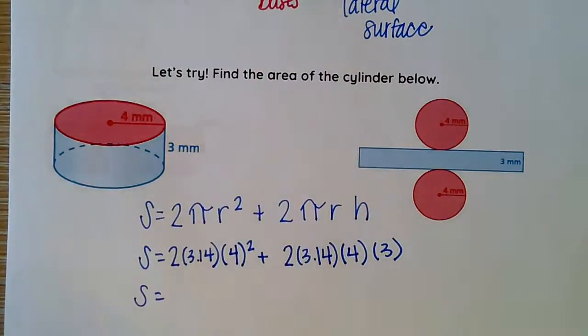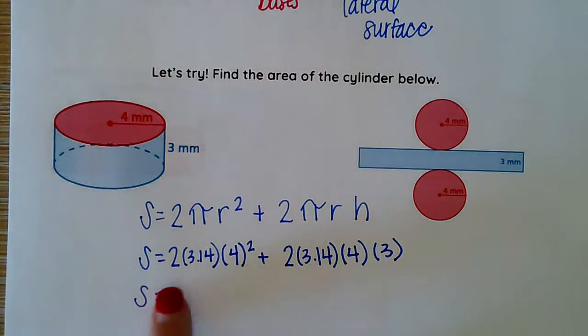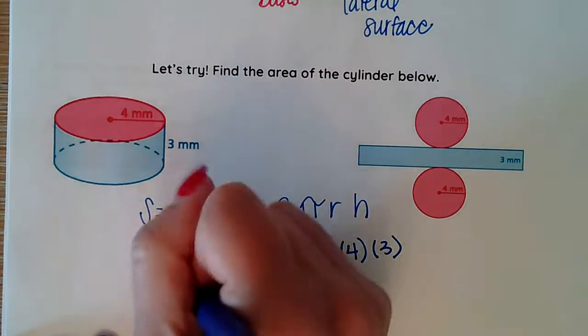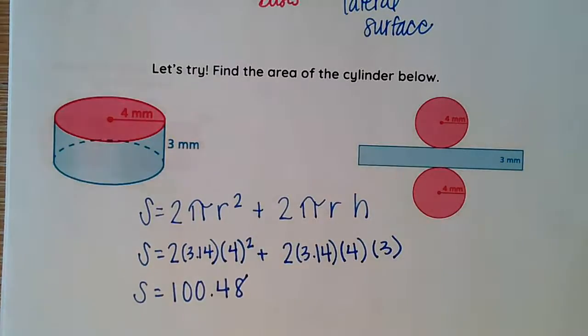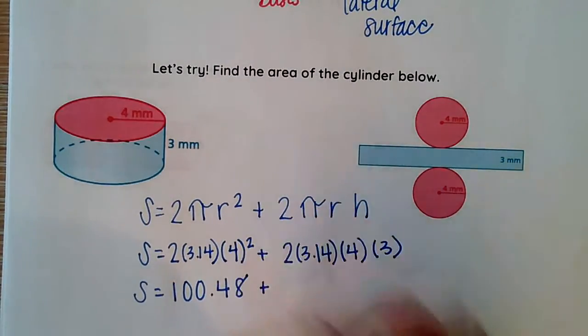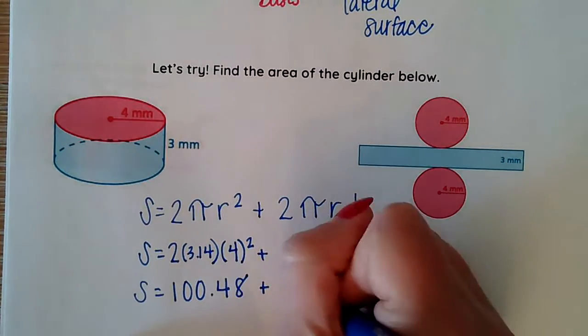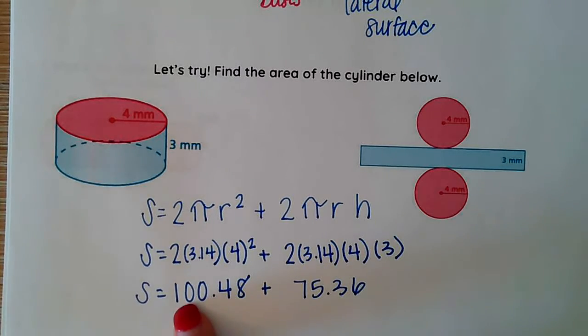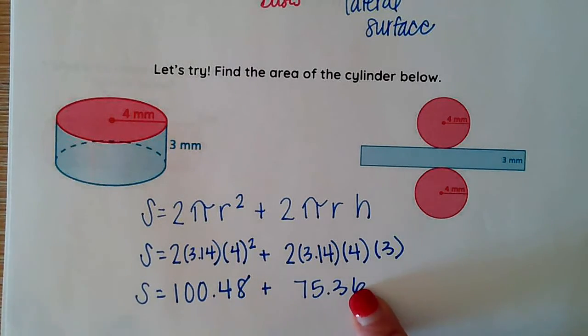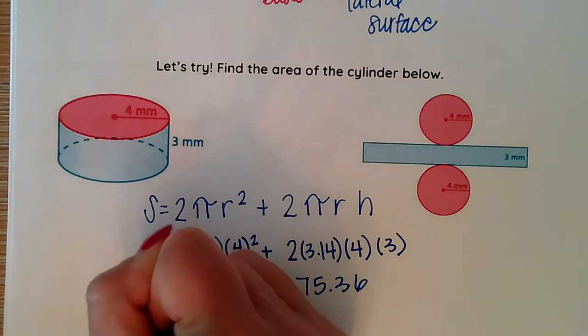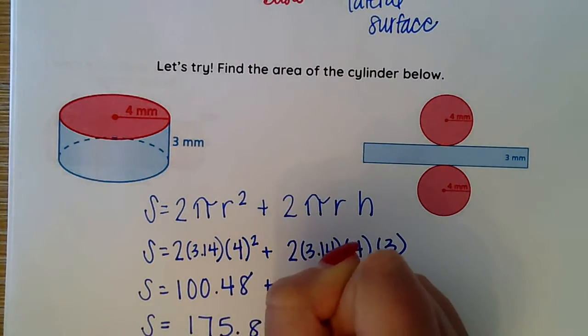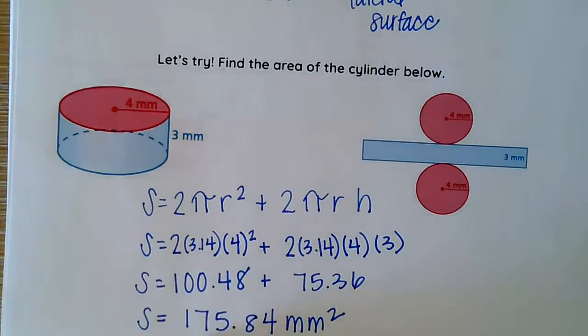Then I go ahead and I can plug this all into my calculator. If I combine all of this, 2 times 3.14 times 4 squared, it's going to get me 100.48. Then I add that to this total, 2 times 3.14 times 4 times 3, which is going to get me 75.36. Now I've got the area of my two circles. That's my circles combined plus the area of my rectangle. I add that all up to get me a grand total of 175.84 millimeters squared. And that's my surface area.